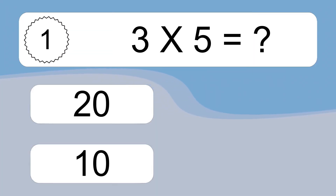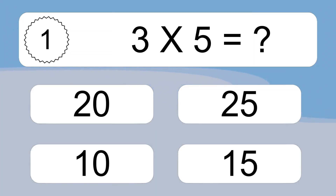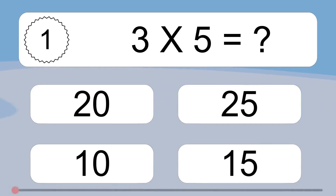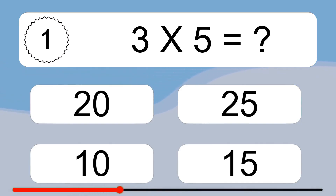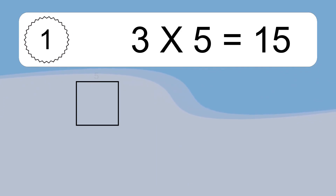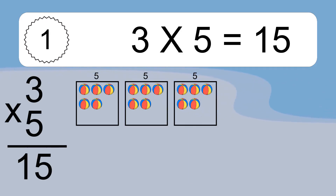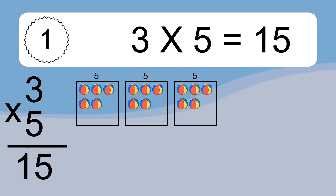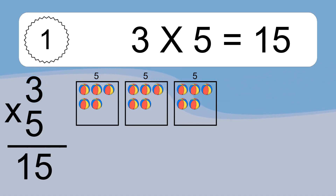3 times 5 equals what? 3 times 5 equals 15. We have 3 boxes, and each box has 5 colorful balls inside. If you count all the balls in all the boxes together, you will have 3 times 5 balls. This equals 15 balls.